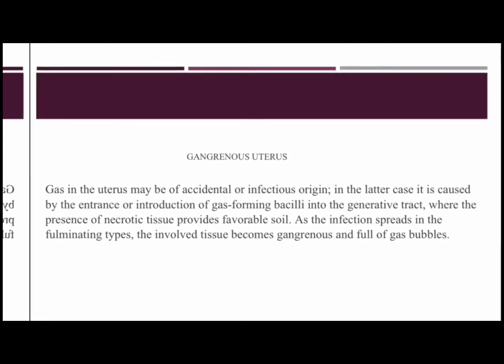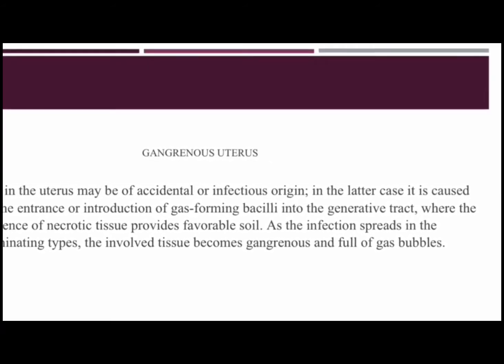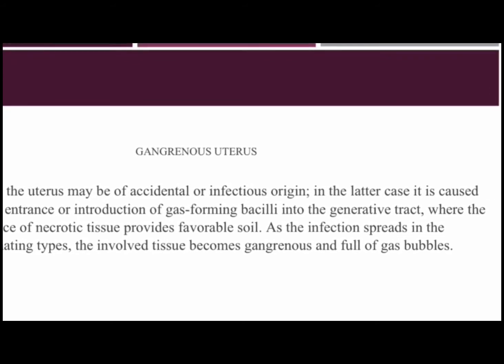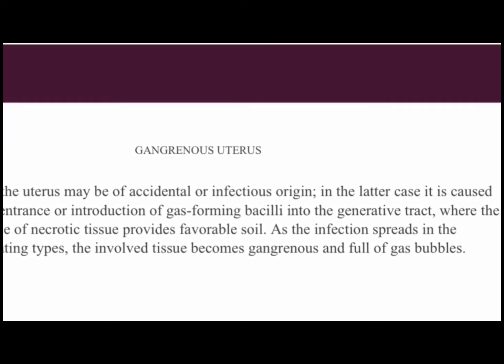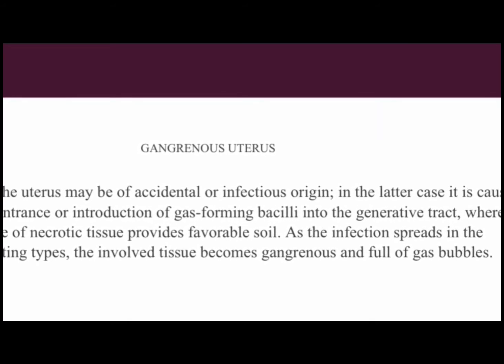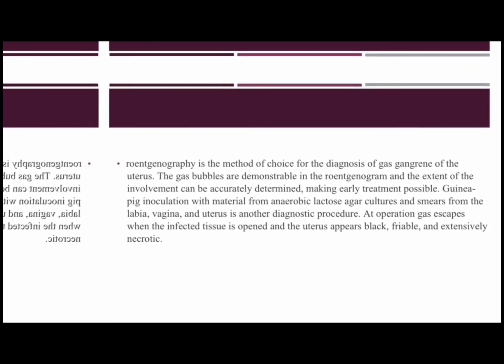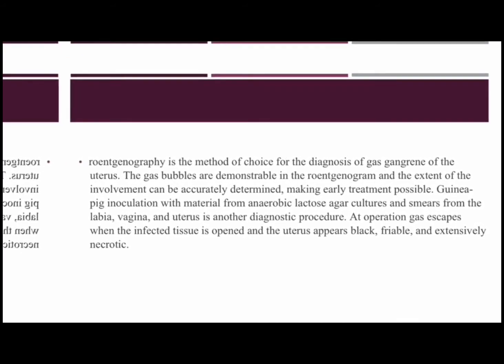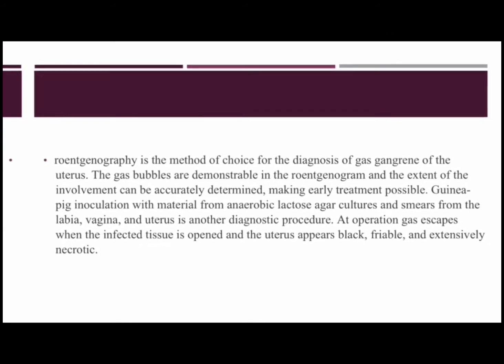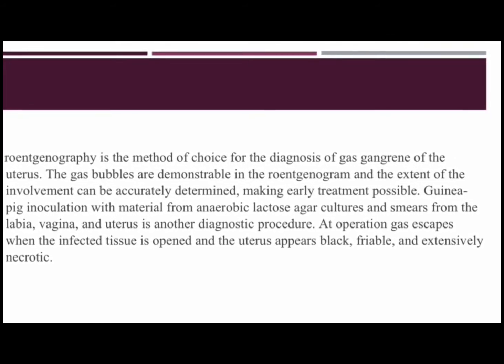Gas in the uterus may be of accidental or infectious origin. In the latter case, it is caused by the entrance or introduction of gas-forming bacilli into the generative tract, where the presence of necrotic tissue provides favorable soil. As the infection spreads in the fulminating types, the involved tissue becomes gangrenous and full of gas bubbles. Roentgenography is the method of choice for the diagnosis of gas gangrene of the uterus, and the extent of the involvement can be accurately determined, making early treatment possible.